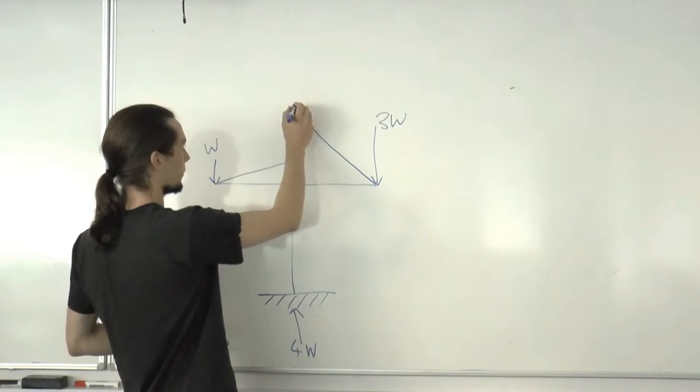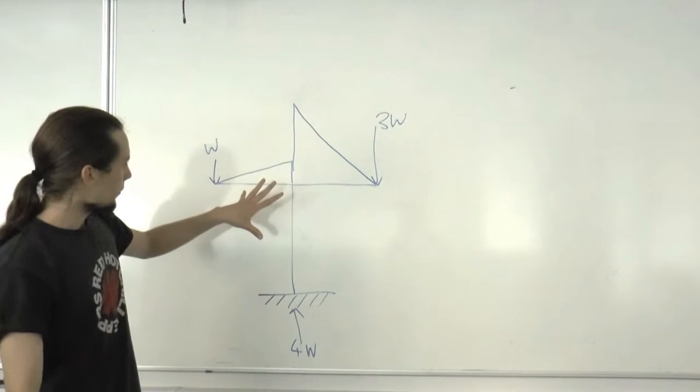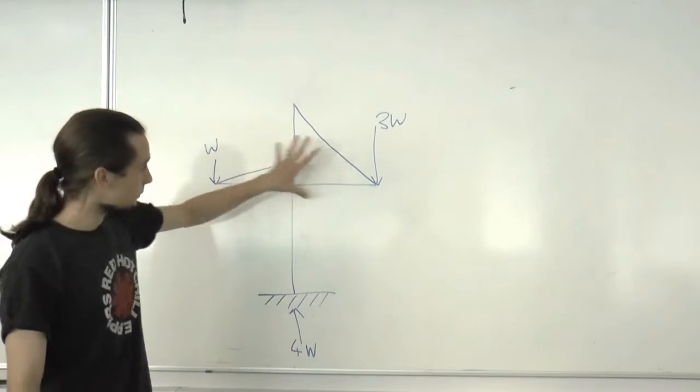It's going to go 3 times the larger magnitude. That's the bending moment diagram for the beam.